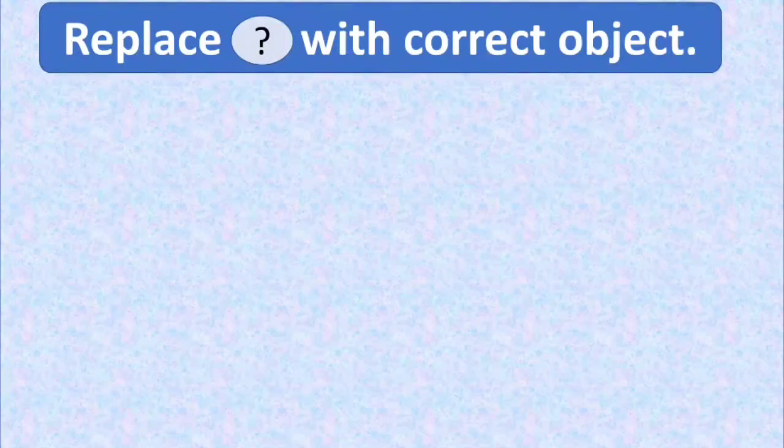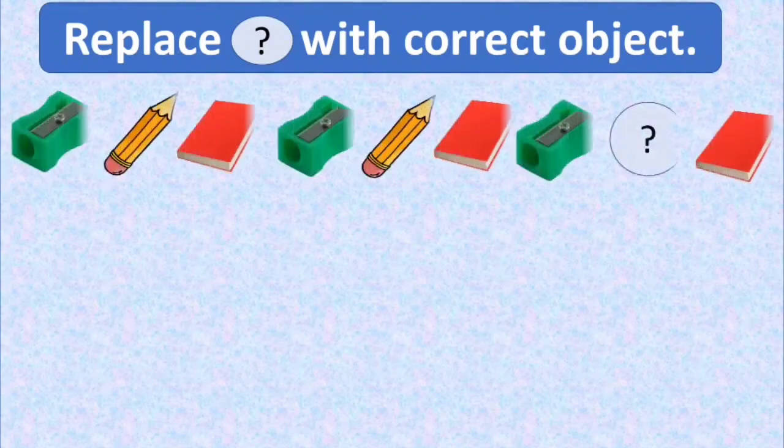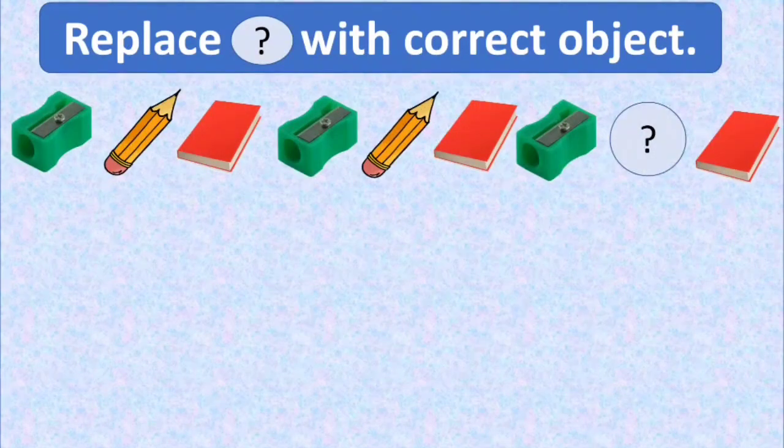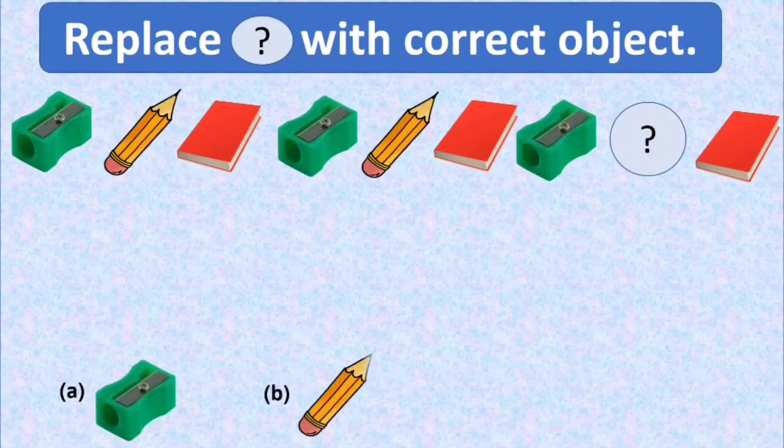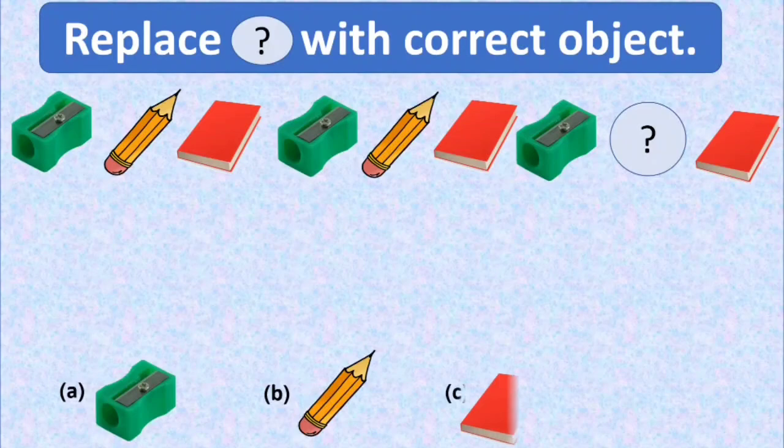Replace the question mark with correct object. It is again a pattern of some stationary objects. And here we have a question mark in between the pattern. We have to replace the question mark with correct object and complete the pattern. Option A is a sharpener, option B is a pencil, option C is a book, and option D is a pen.